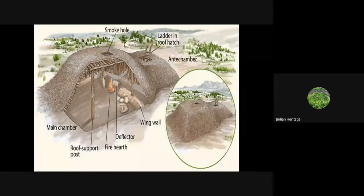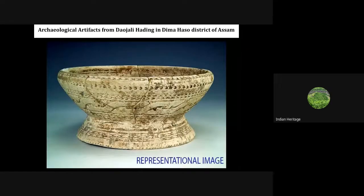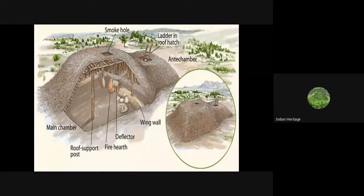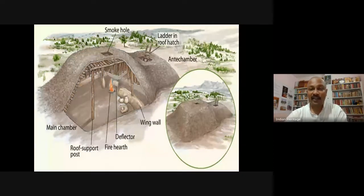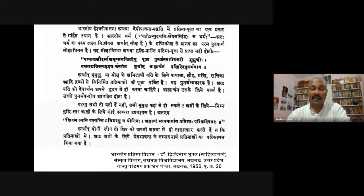After studying these cultures from Jammu Kashmir, Assam, east to west and north to south, we can see interesting patterns in the structures scholars describe — including a smoke hole, ladder in the roof hatch, ante-chamber, main chamber, wing wall, deflector, fire hearth, and roof support posts — showing the architectural developments of that time.